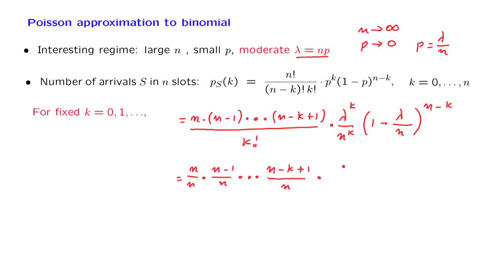Take this term k factorial and move it underneath the lambda to the k term. And then let us split this last term into two pieces in this manner.